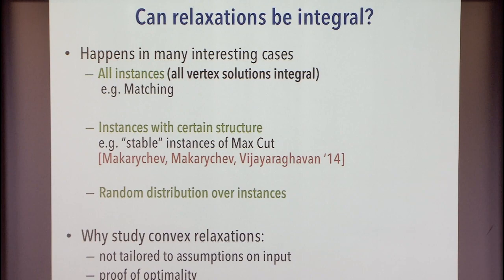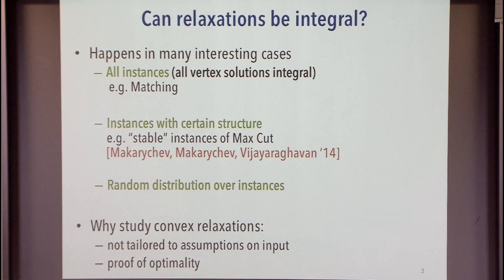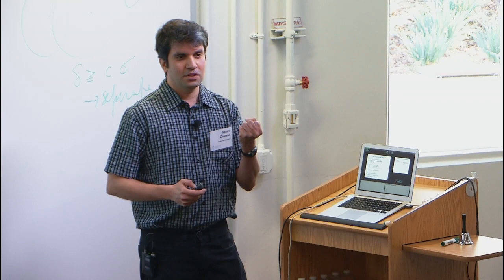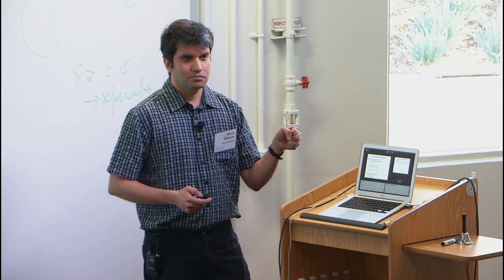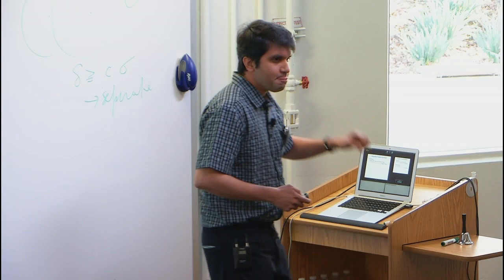In some cases I'll point out where this kind of robustness is actually useful. One nice thing about convex relaxations is that they come with a proof of optimality, as opposed to other heuristics. When you solve the problem and get an integer solution, you have a guarantee that you in fact found the optimal solution. That's a nice thing to have.